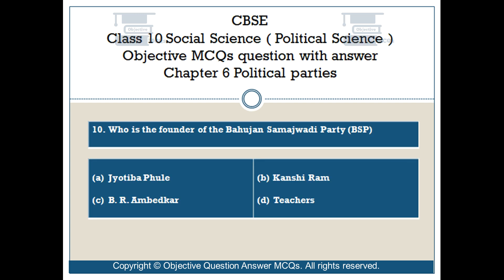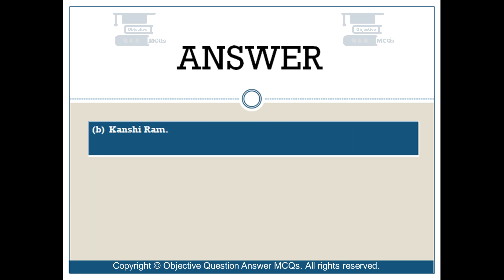Question number 10. Who is the founder of the Bahujan Samajwadi Party (BSP)? Option A: Jyotiba Phule. Option B: Kanshi Ram. Option C: B.R. Ambedkar. Option D: Teachers. The right answer is Option B: Kanshi Ram.